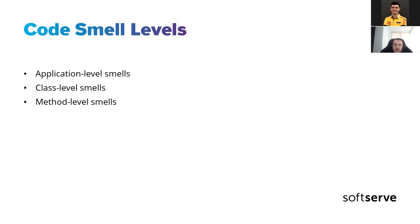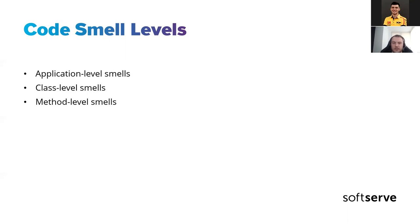The last level is method level smells. At this level we see smells like too many parameters for a method or function, very long method code, and also less obvious ones like excessive return of data — for example when a method returns you an object but the caller uses only some fields of that object, and another caller uses other fields.